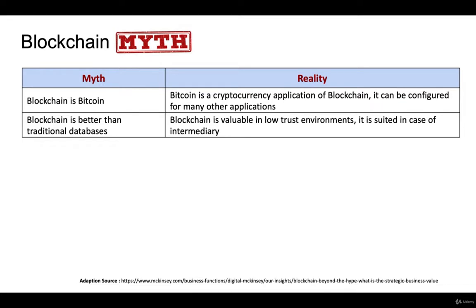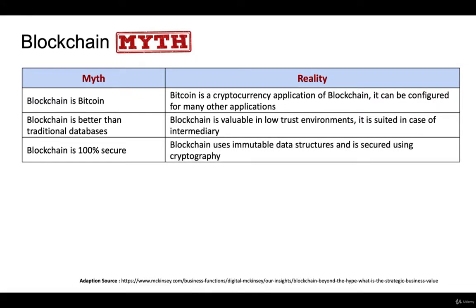Is blockchain 100% secure? In a sense, yes — the data stored is in an immutable data structure secured using cryptography. Immutable means you can add data to the blockchain but you cannot delete it. If someone tries to decrypt the hashes, each block is linked to the other block via a hash and pointer, so changing one place doesn't change the data on the other peers — it won't tally. This is where blockchain differs from a traditional database.